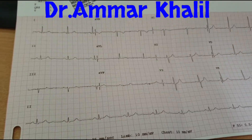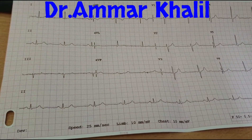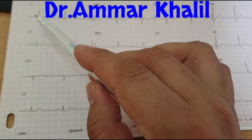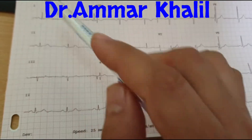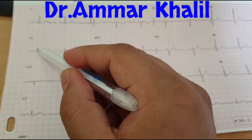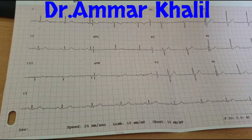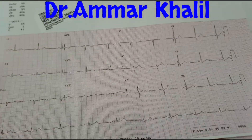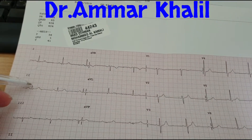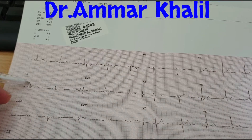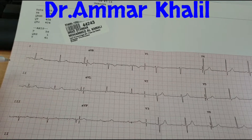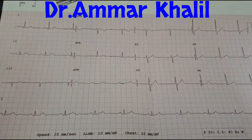This ECG is for one patient. We are looking at lead one and lead two. You can see the R wave here — a positive R wave and positive R wave. That means it is a normal axis. This is normal axis.